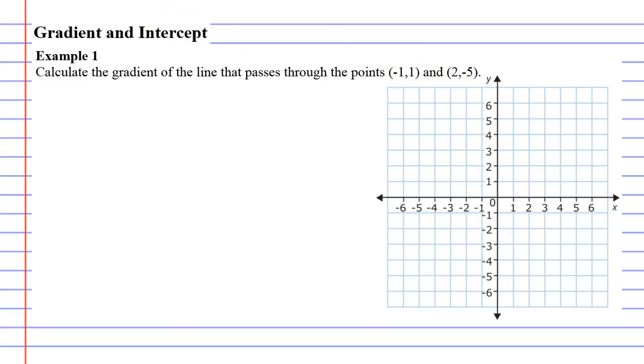For this question, we're going to start by drawing these points. So we go negative 1, 1. We always start with our x and then our y value. So x is negative 1, y is 1.